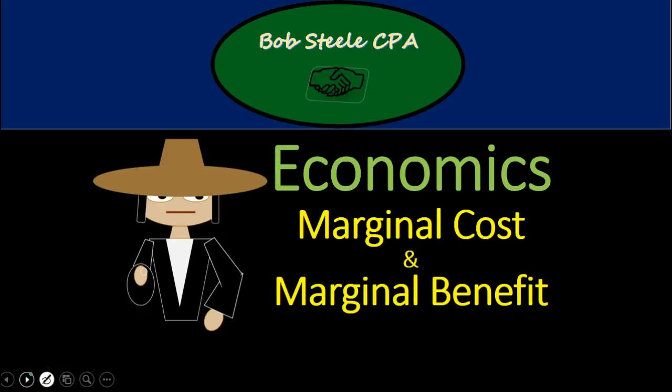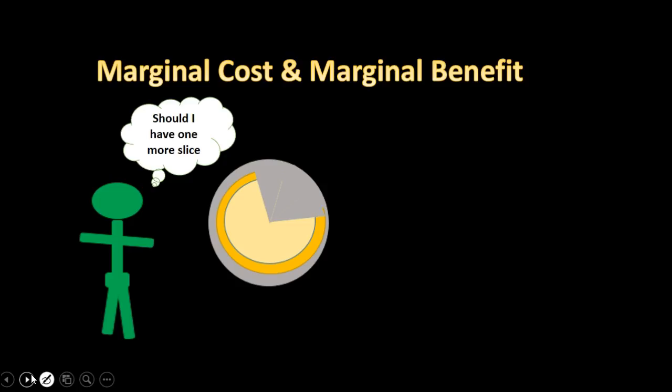Hello, in this lecture we're going to talk about marginal cost and marginal benefit. In economics we often think about decision making happening on the margin. So when we make decisions we want to make decisions on the margin, meaning we're measuring the costs and the benefits at the margin.